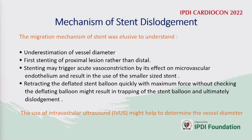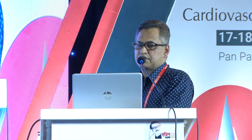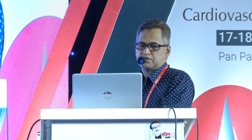What are the mechanisms for stent dislodgement? These include underestimation of the vessel size, stenting on the proximal portion rather than the distal portion, and stenting may trigger vasoconstriction of the endothelium — especially when a smaller-sized stent is used. Additionally, retracting the deflating stent balloon quickly with maximum force without checking deflation results in trapping of the stent balloon and ultimately losing the stent.